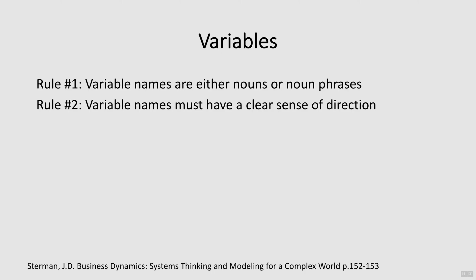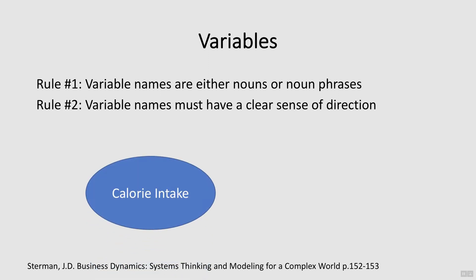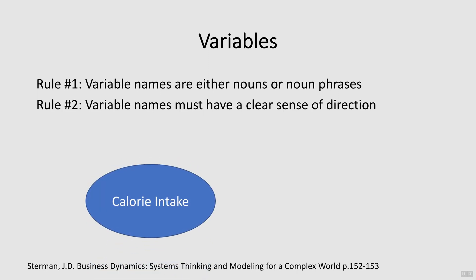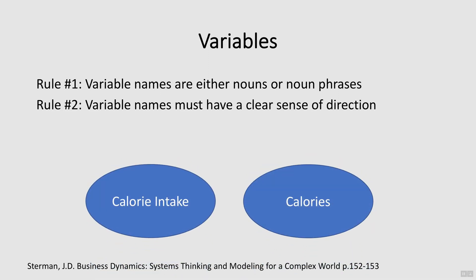Rule number two: variable names must have a clear sense of direction. For example, instead of calories, we'd say calorie intake. Calorie intake has a clear sense of direction — it can either go up or down depending on how much a person eats — whereas the word calories on its own does not provide a sense of direction.